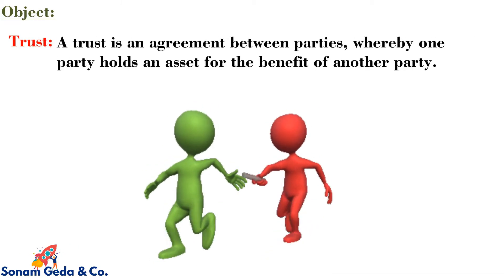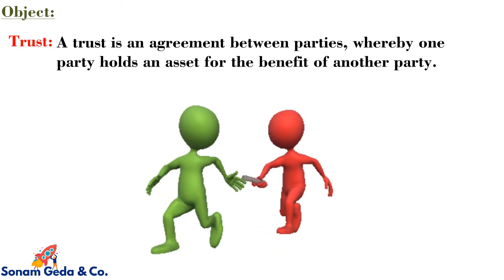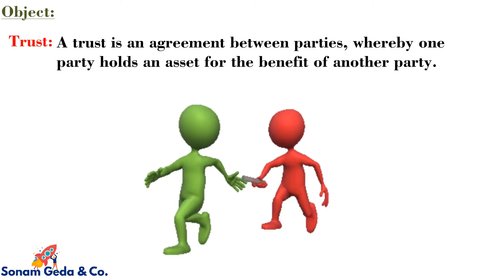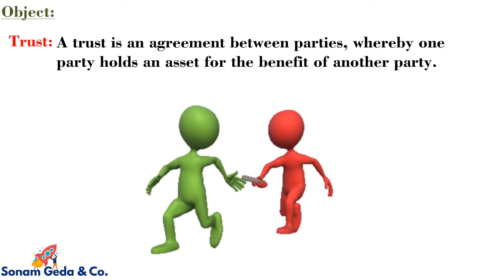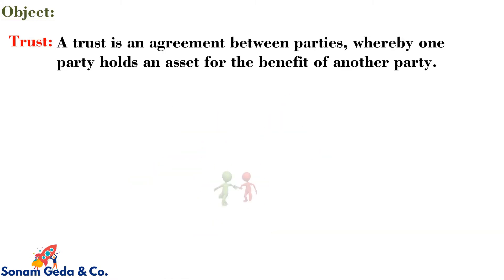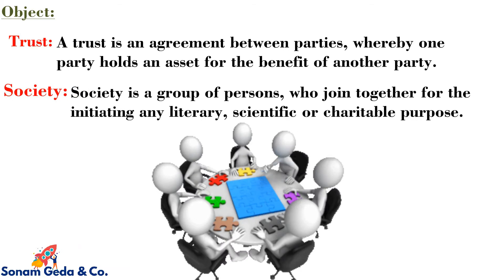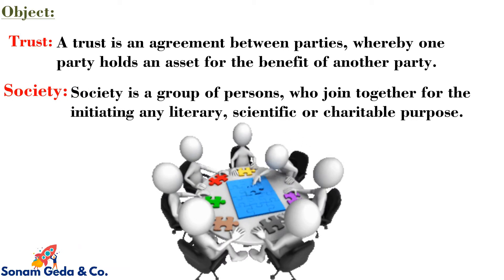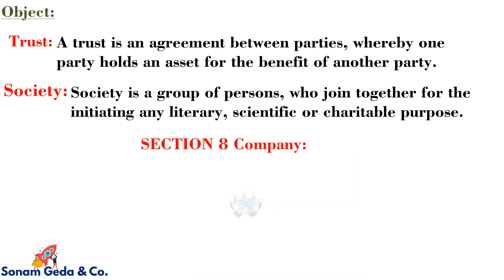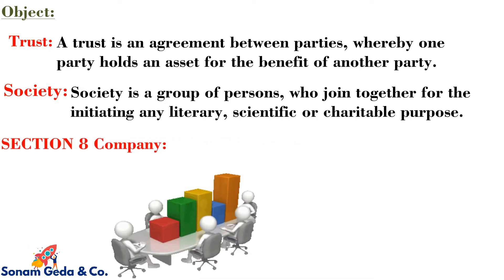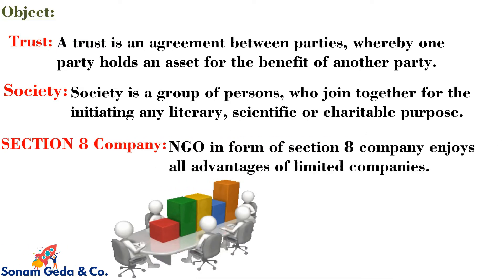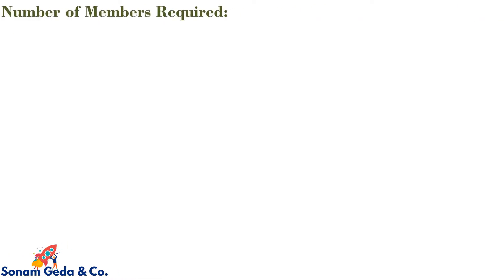Object: a Trust is an agreement between parties whereby one party holds an asset for the benefit of another party. A Society is a group of persons who join together for initiating any literary, scientific, or charitable purpose. An NGO in the form of a Section 8 Company enjoys all advantages of limited companies.